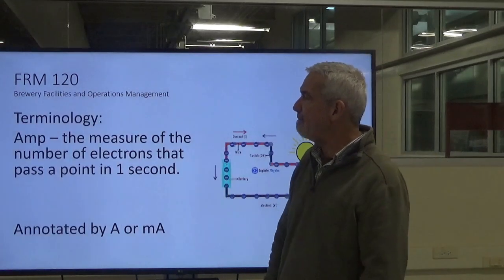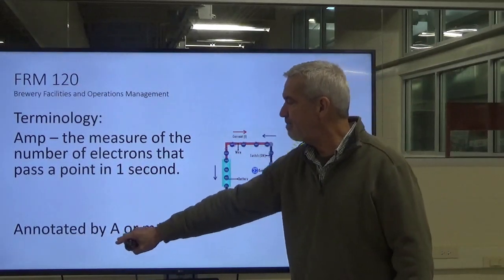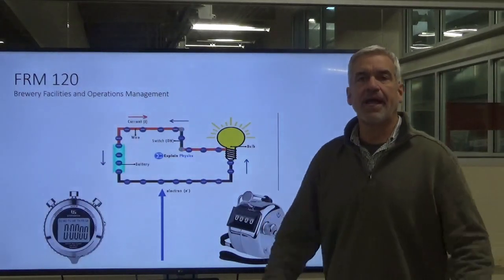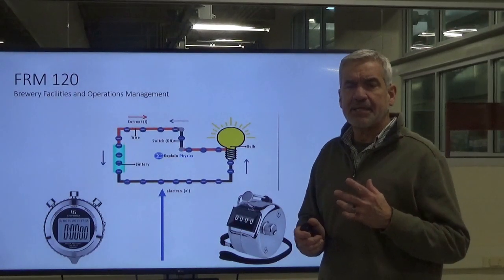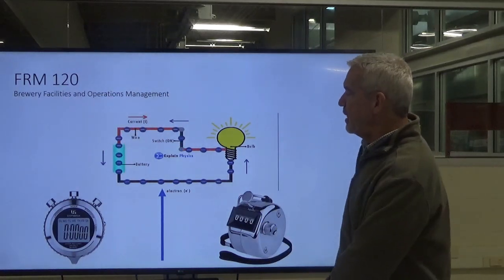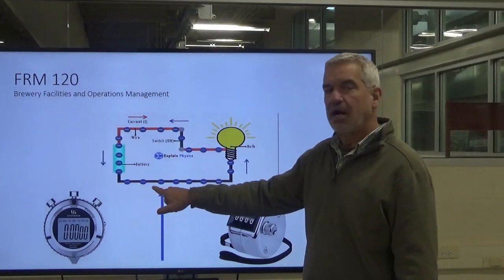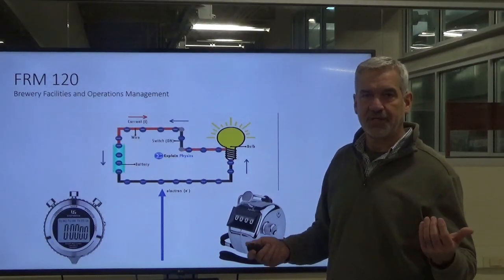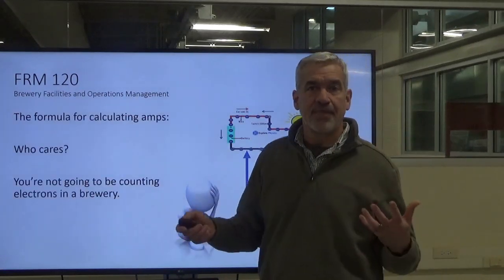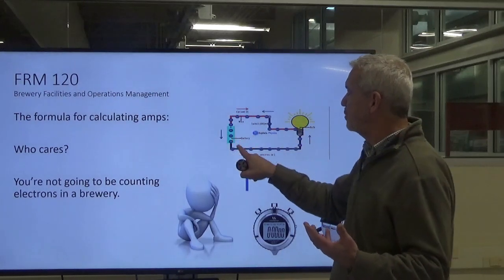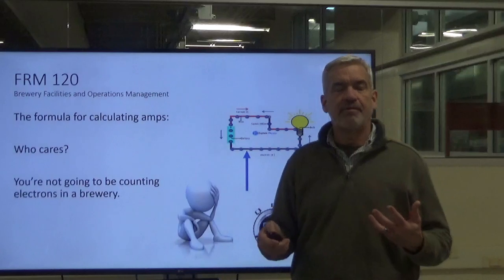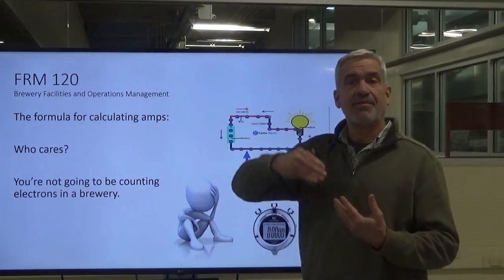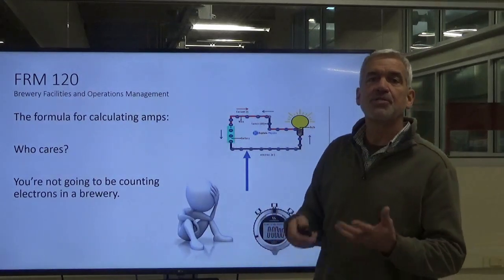You're going to get a chance to use those as well. Amps are annotated by a capital A, or a small m and a — mA — indicating milliamps. When we're talking about amps, it was named after a gentleman whose last name is Ampère — a Frenchman who did a lot of studies with electricity. Basically, an amp is the number of electrons that flow past a certain point in one second. Obviously you can't count them because you can't see them, but that is what an amp is. The number of electrons that flow by that certain point in one second — that's how many amps you have. If the current is flowing faster, you're going to have a higher number past that point, so you have an increase in amps.